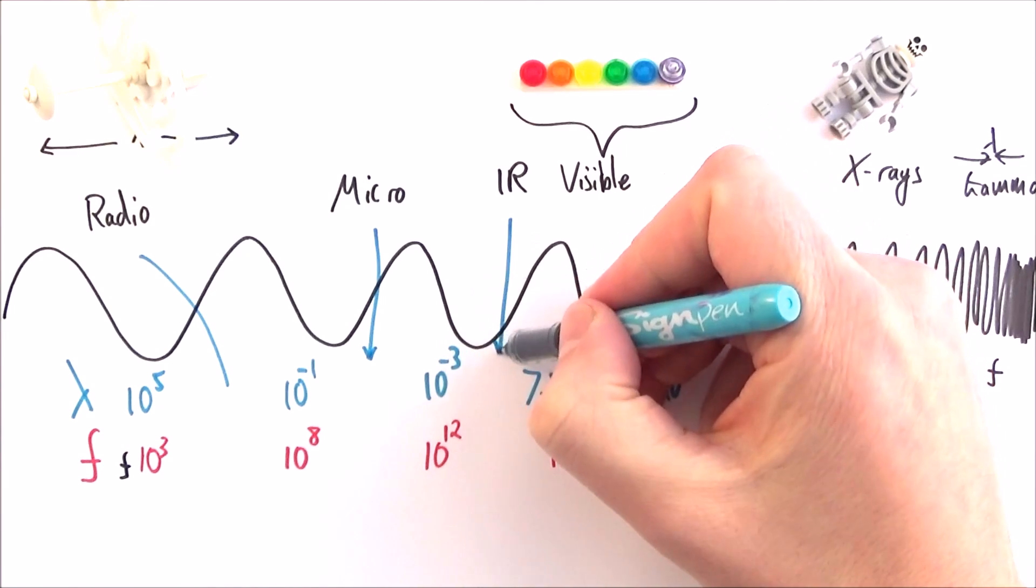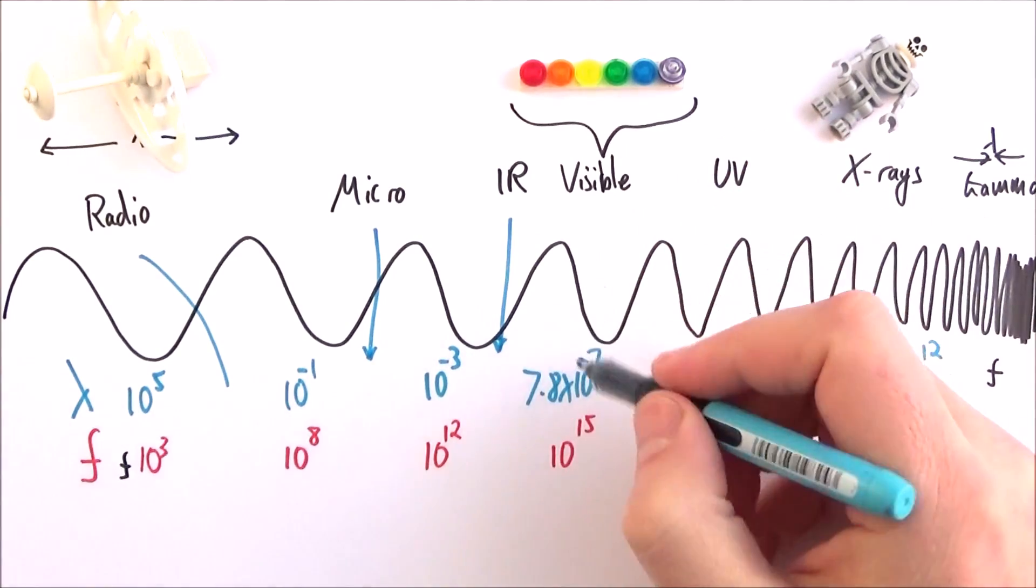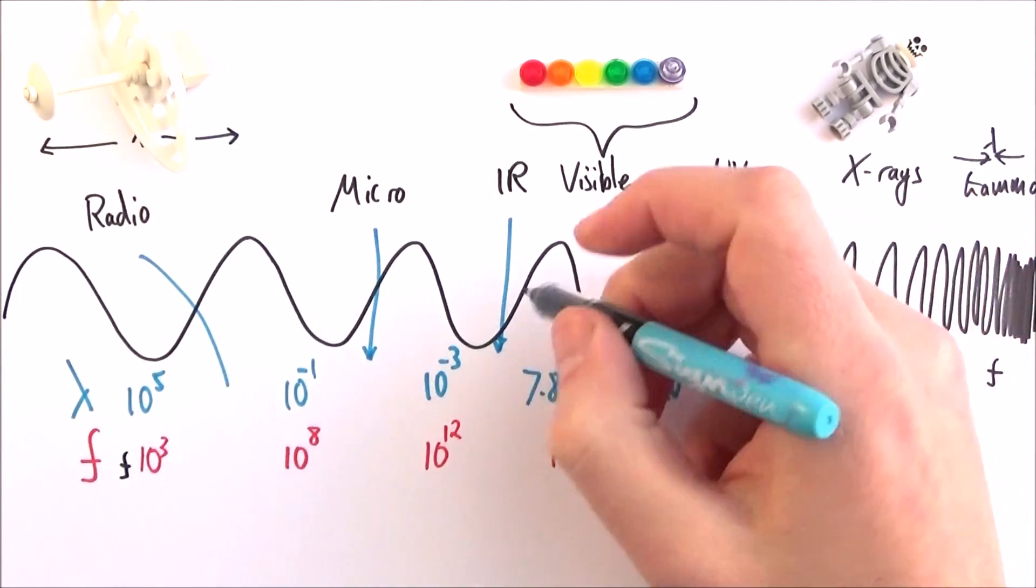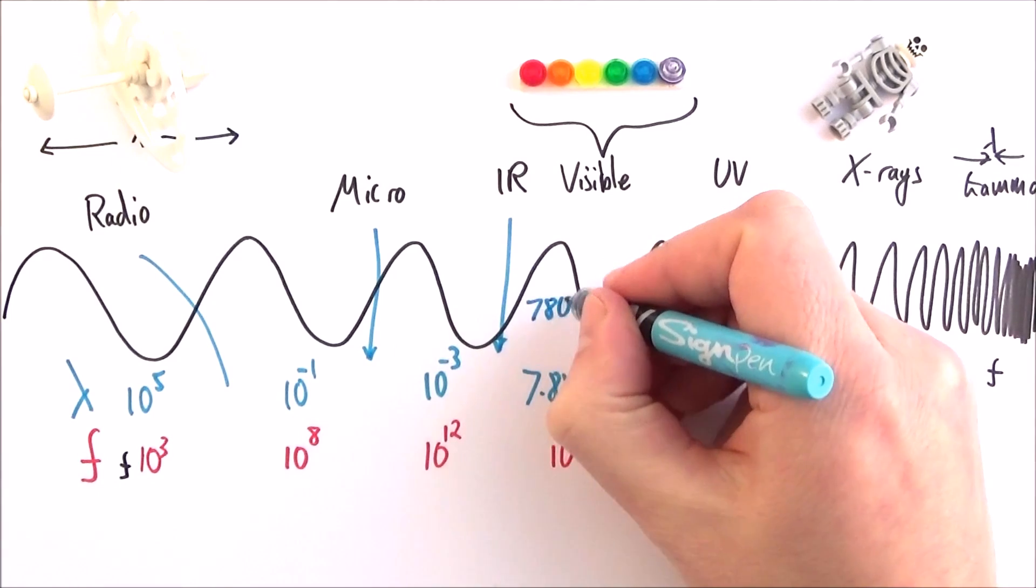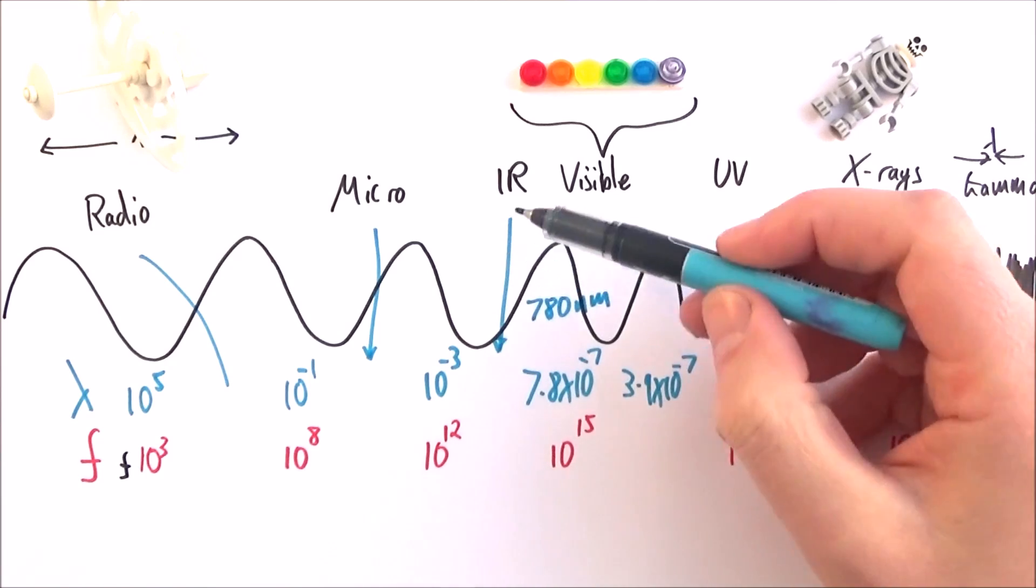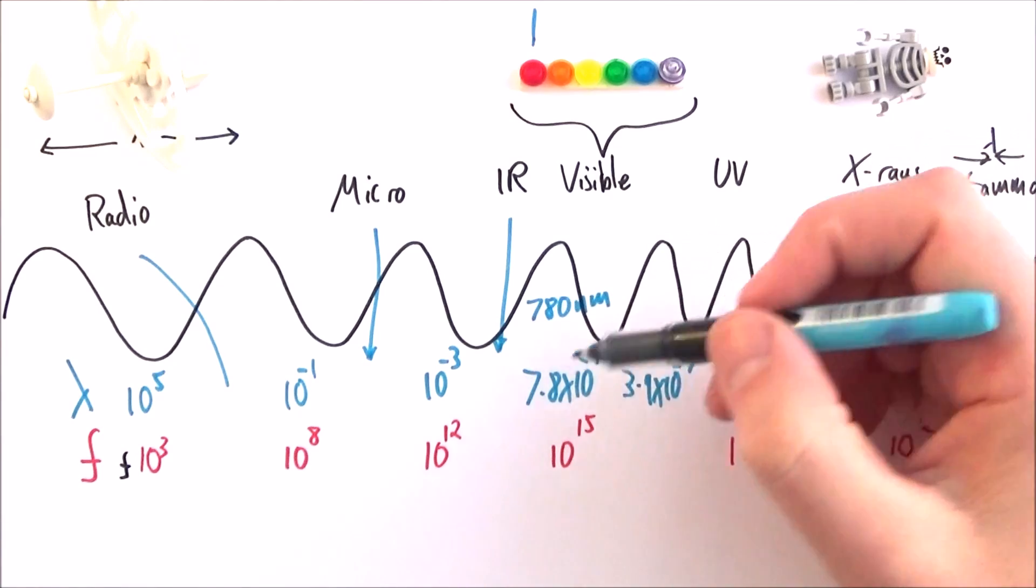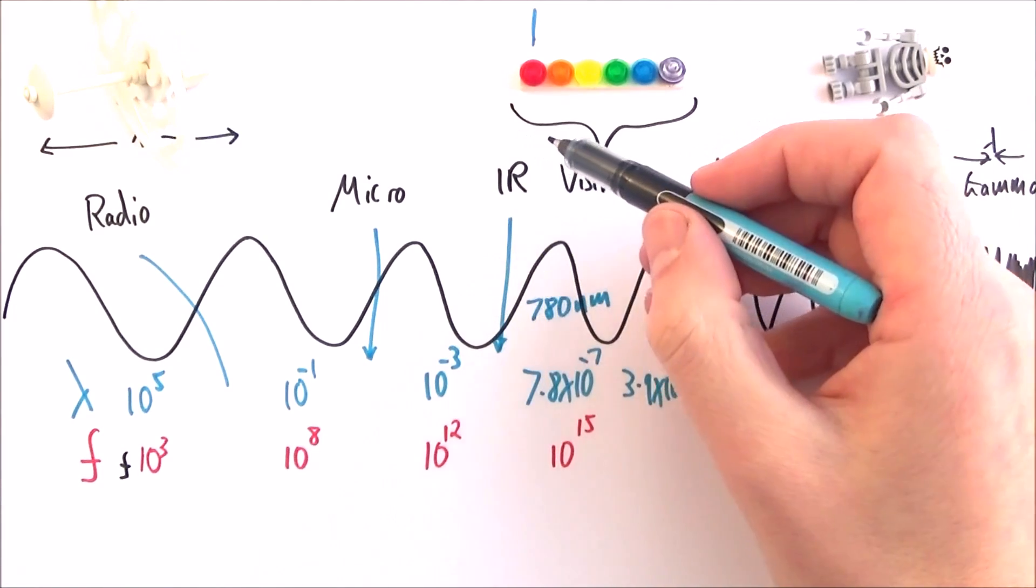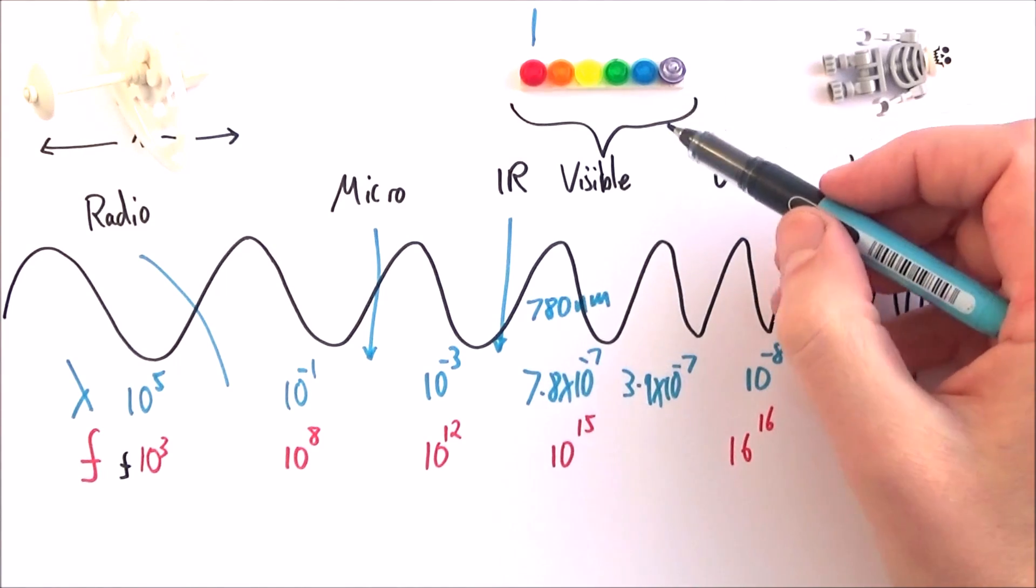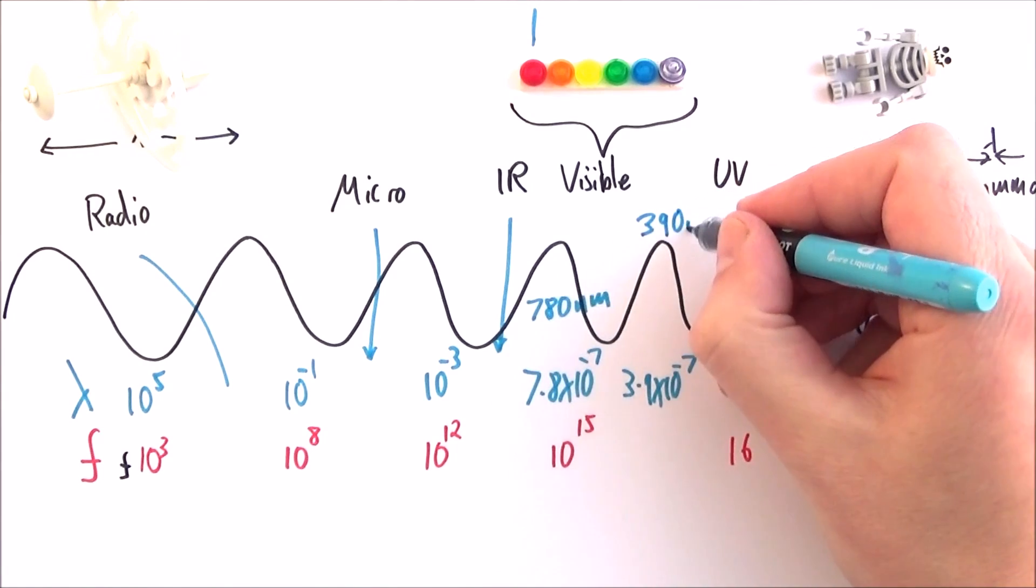Infrared, 10 to the minus 3 down to 7.8 times 10 to the minus 7. Well, that's a very precise number. The others are just sort of vague. Now, 7.8 times 10 to the minus 7 is 780 nanometres. And that's where we go from the infrared that our eyes can't detect to the red light. So red light is about 780 nanometres. If we then keep going through the higher energy light, we then get to the violet.